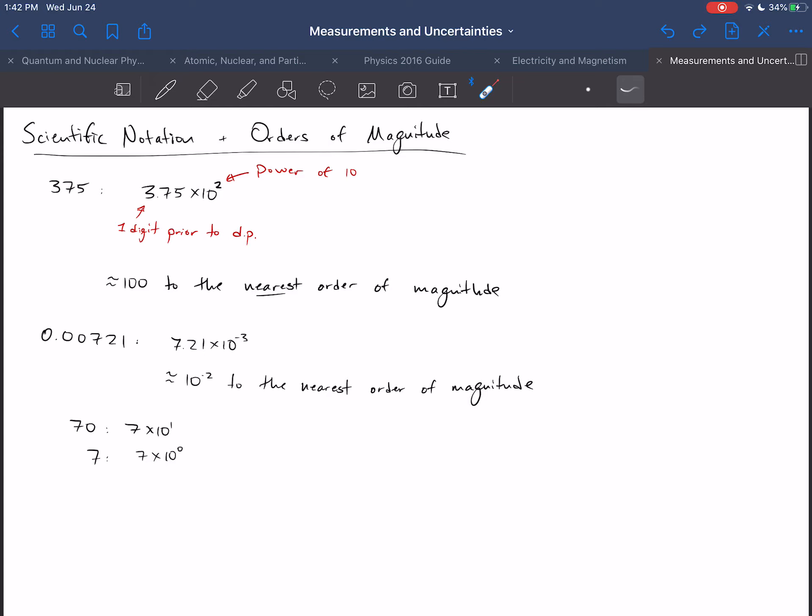So, 3.75 times 10 to the 2 is equivalent to 375, and at the other end of the spectrum, 0.00721 is equivalent to 7.21 times 10 to the negative 3.